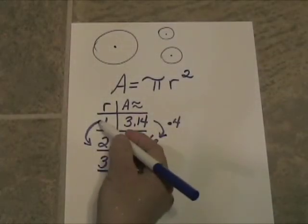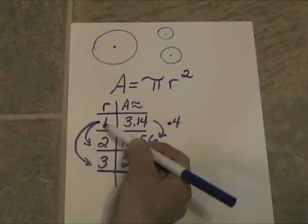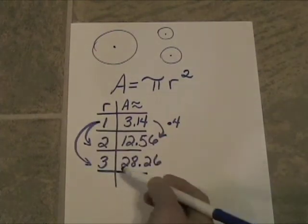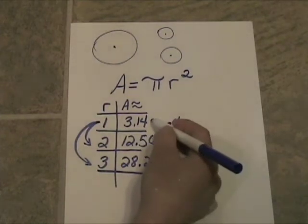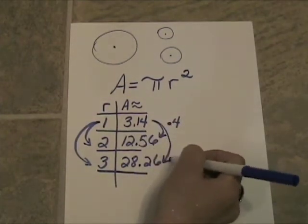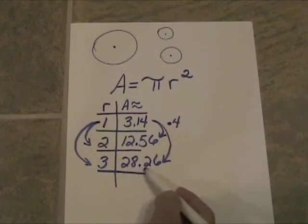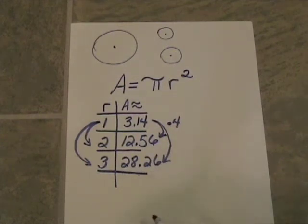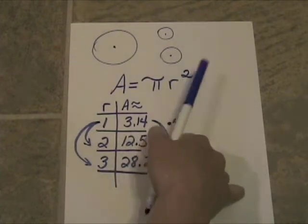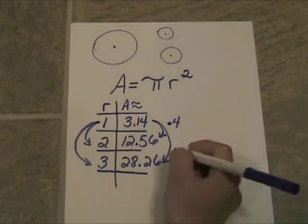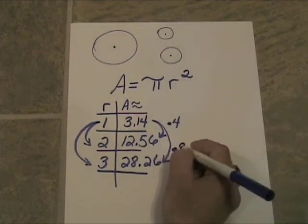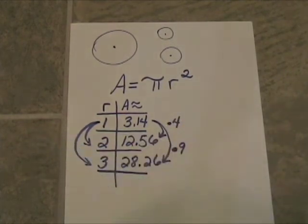Let's see what happens when we triple. If we triple the radius, the radius gets three times bigger, but look — to go from 3.14 to 28.26, that is nine times bigger. And three to the second power is nine. So tripling the radius increases the area by the square of three.